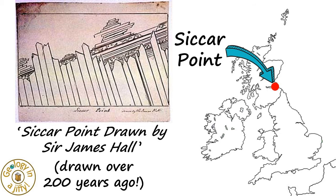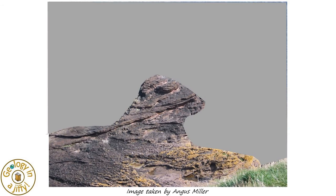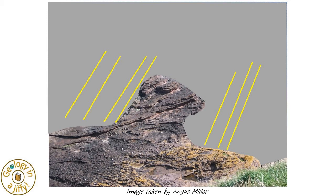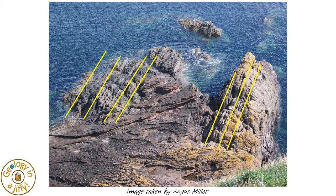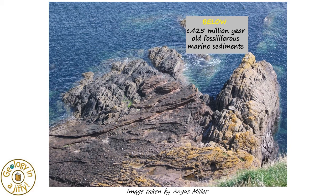At Siccar Point, Hutton saw two main sets of rocks, as evidenced by the drawing that Sir James Hall made during the expedition. Looking from above, one can see there are two main colours in the rocks below. At the base of the cliff area, Hutton saw dark grey coloured and steeply tilted sedimentary layers. These were found to contain marine fossils, meaning that these rocks were deposited in a sea. The fossils also helped geologists date the rock to be about 425 million years old.